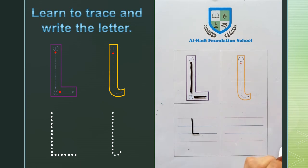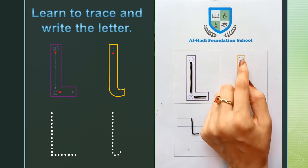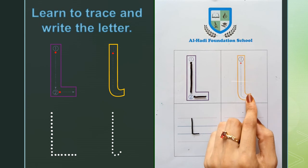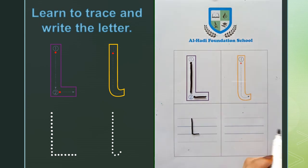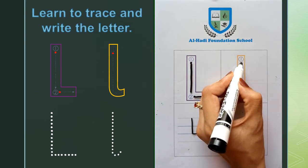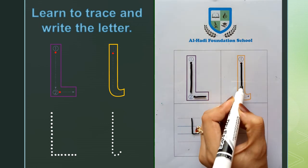Now the small l. When you trace and write, you have to follow one step. Trace with your finger the small l and make a straight line and make a left curve shape. Now make it with a straight line and make a left curve shape.